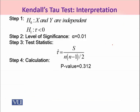So, step number 1: under H0, we have that X and Y are independent. Whereas under H1, we have that tau is less than 0 — that means X and Y are inversely related. Under step 2, the level of significance, alpha, is 0.01.